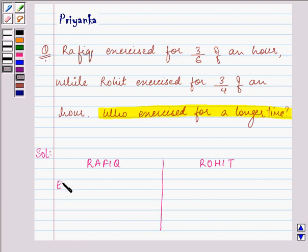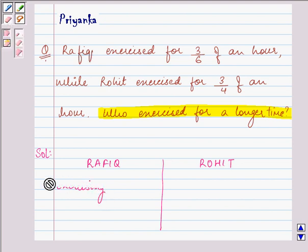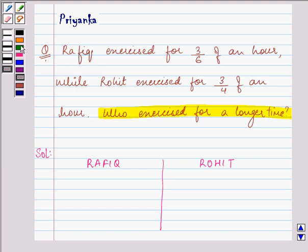Rafiq exercised for 3 by 6 of an hour, and Rohit exercised for 3 by 4 of an hour.